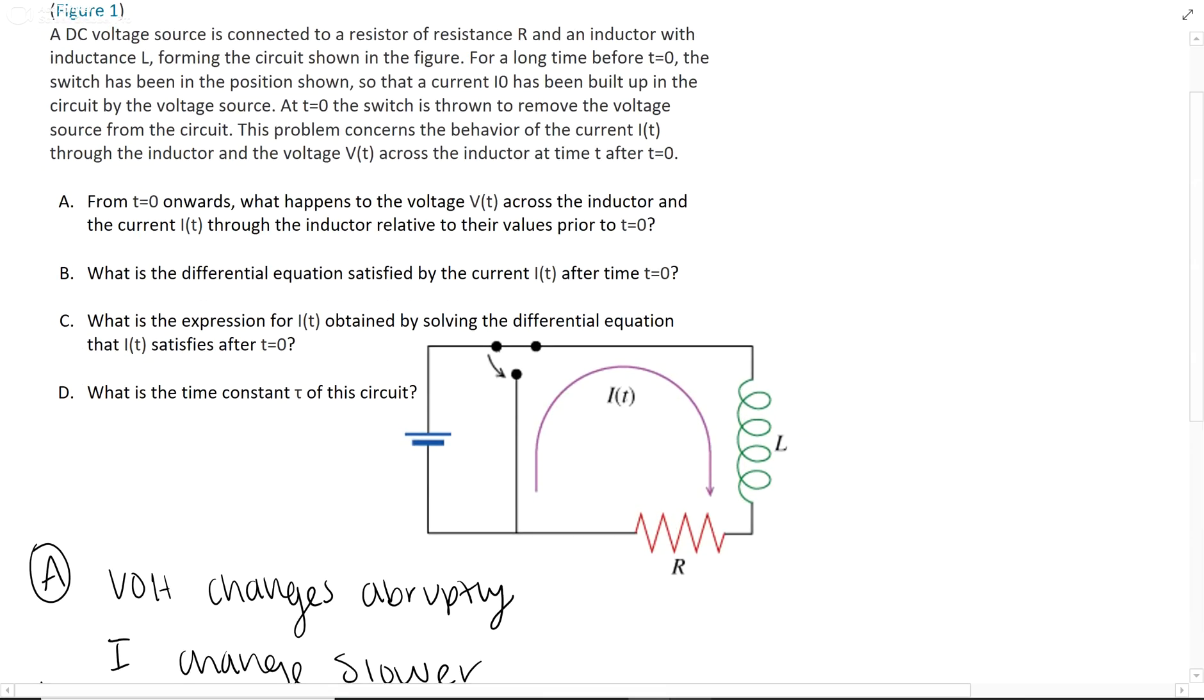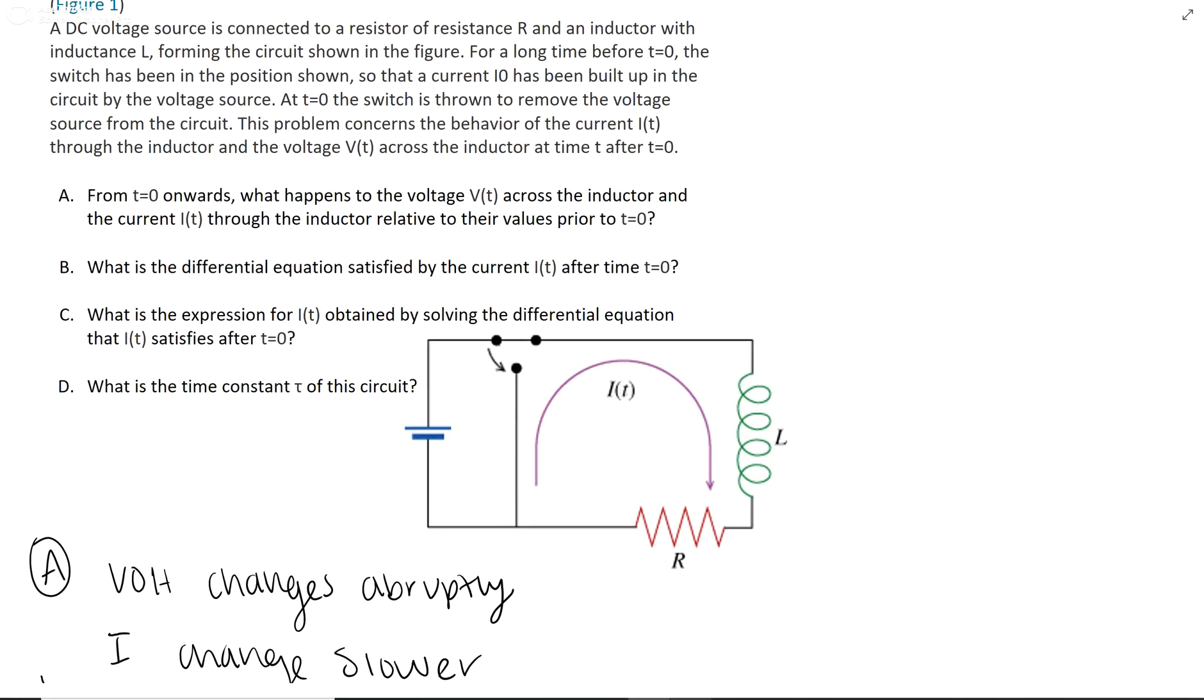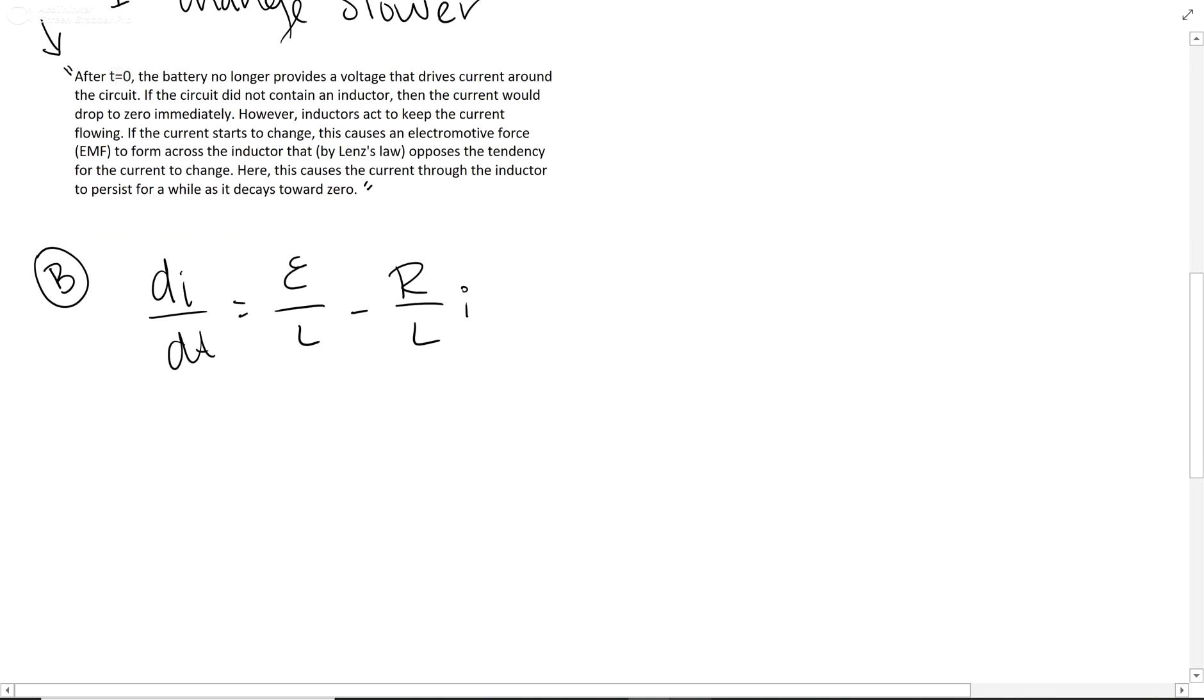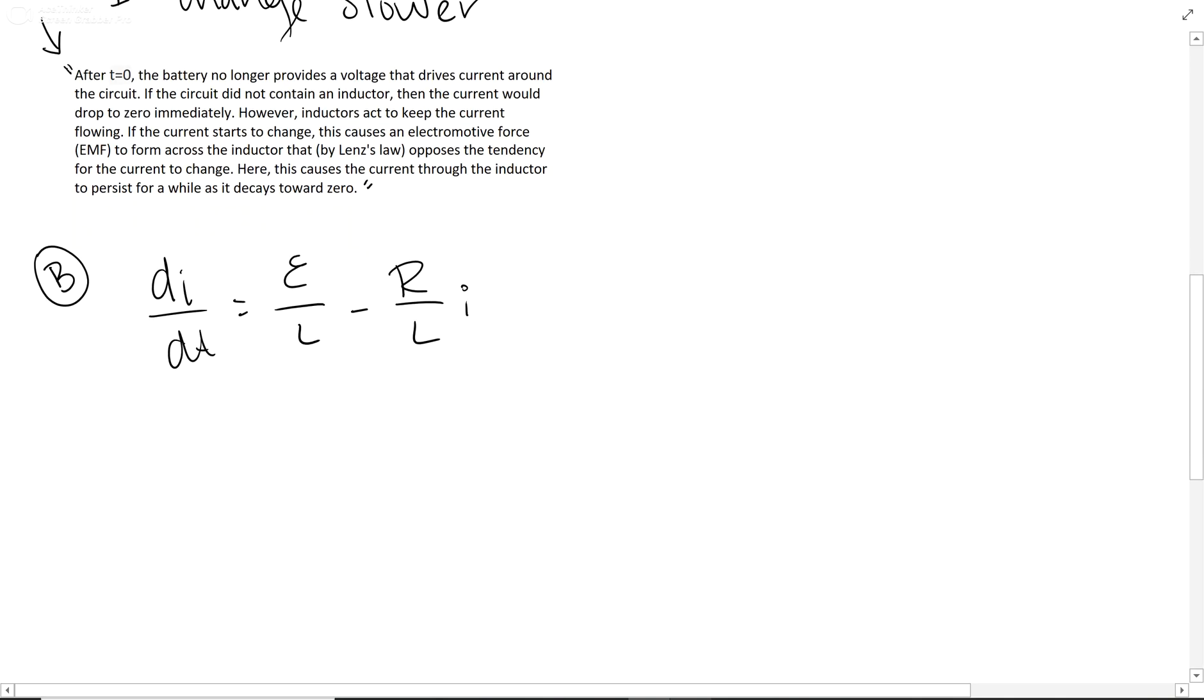And then let's look at B: what is the differential equation satisfied by the current i(t) after time equals 0? So one of the equations you're going to find in your textbook is this right here, and this is for the rate of change of current. Now when after t equals 0 they cut off emf, so this is gone, so your answer is this, but we don't just have an i like they said, we have an i(t), so that is your answer for B.